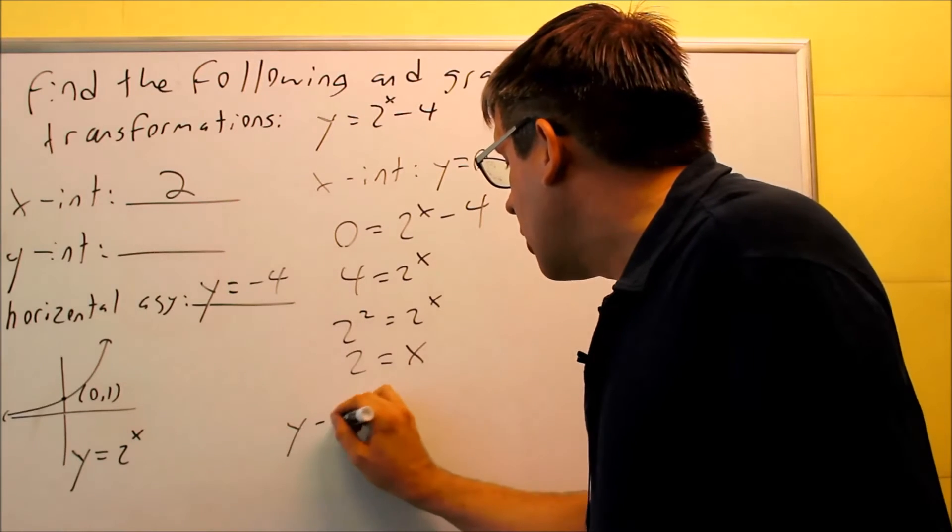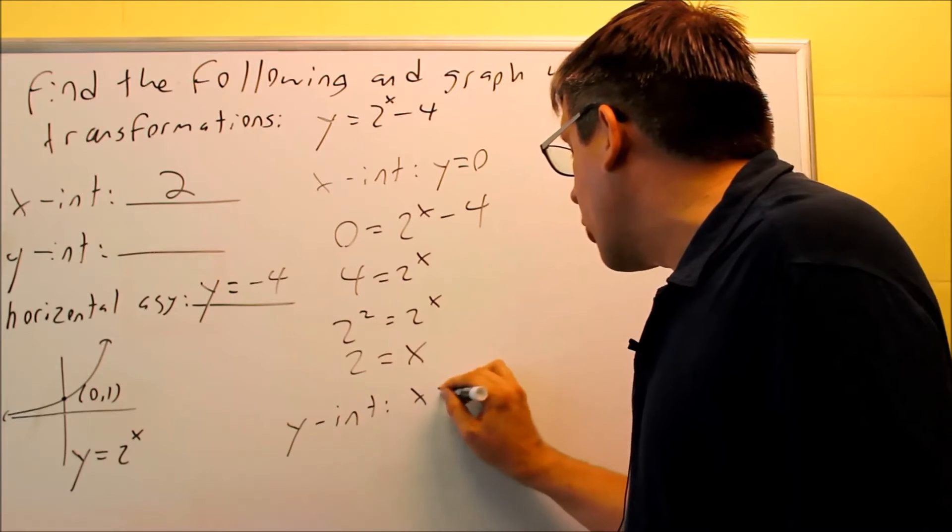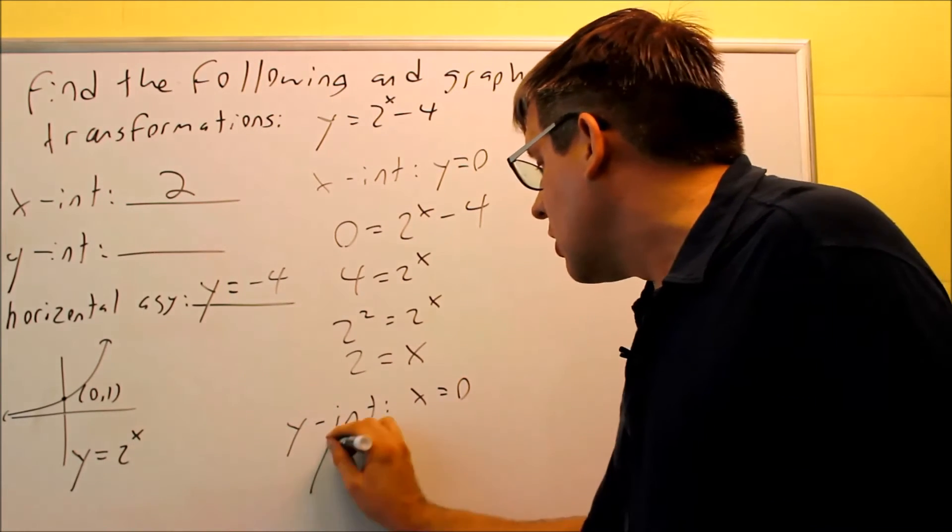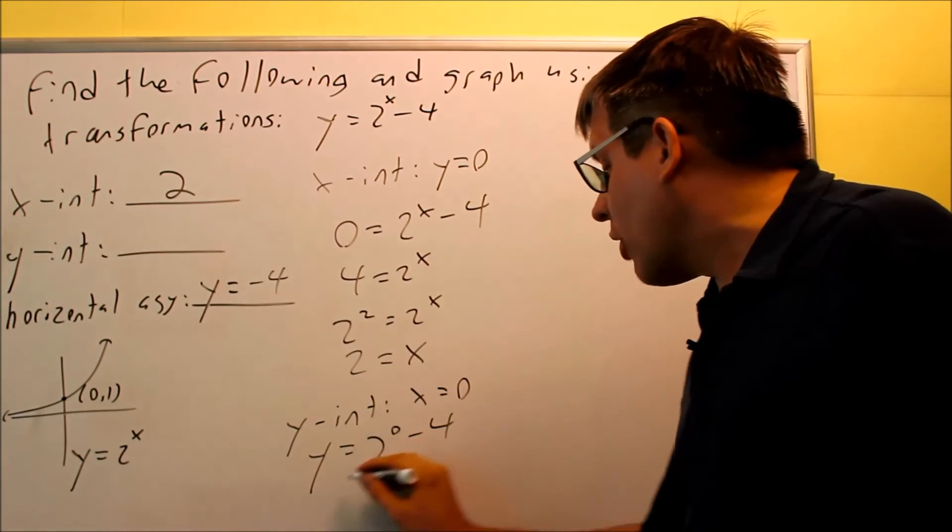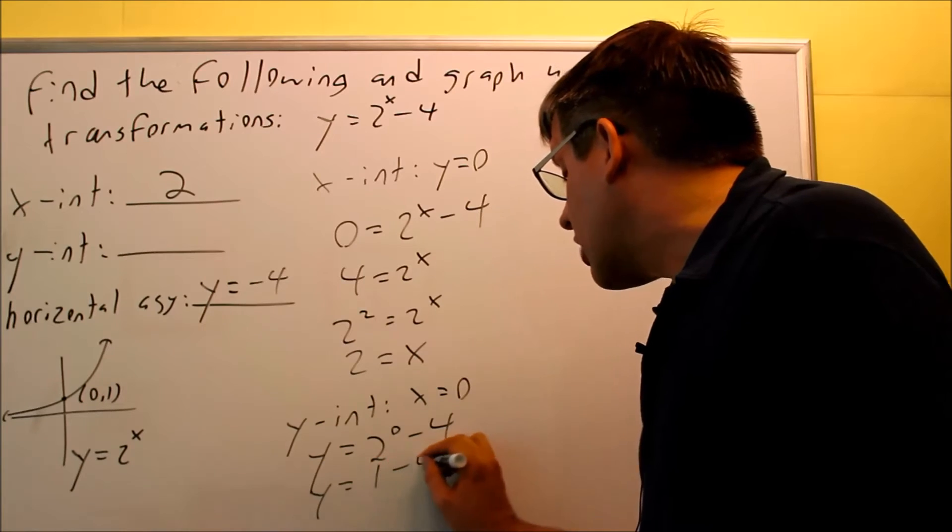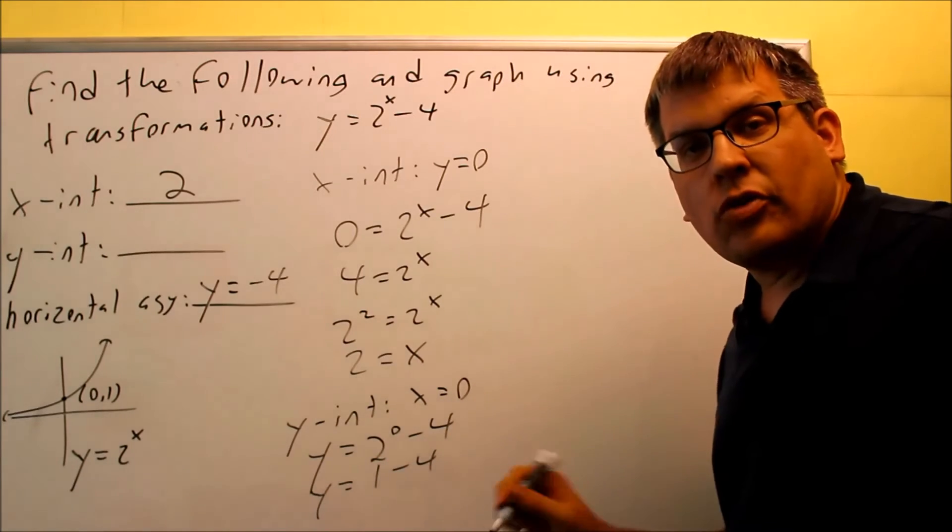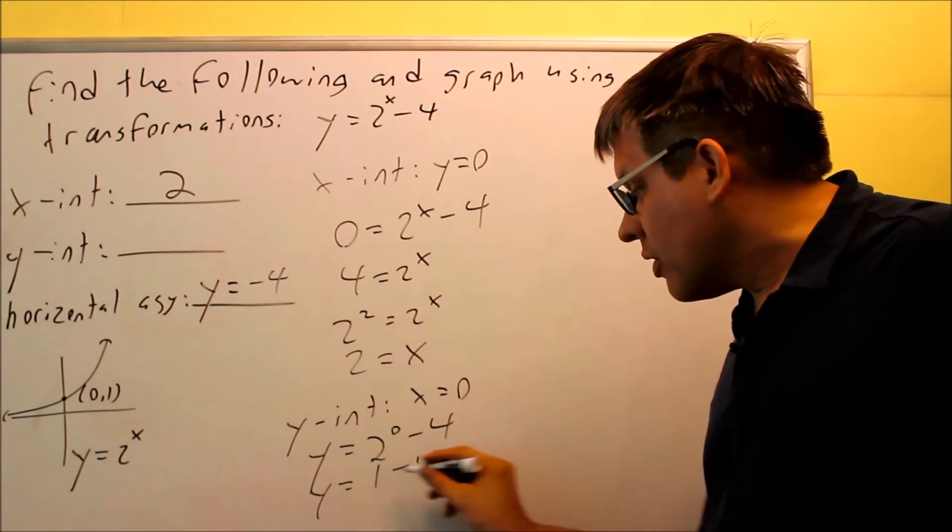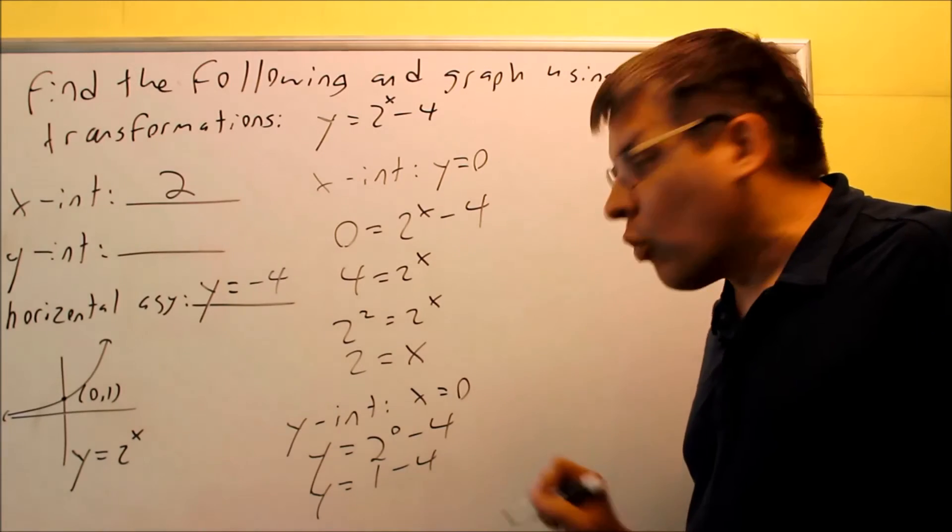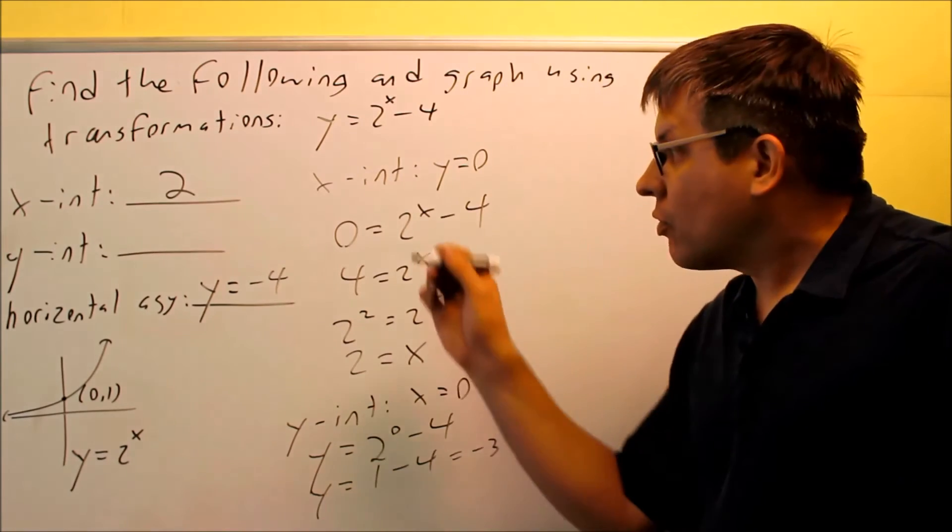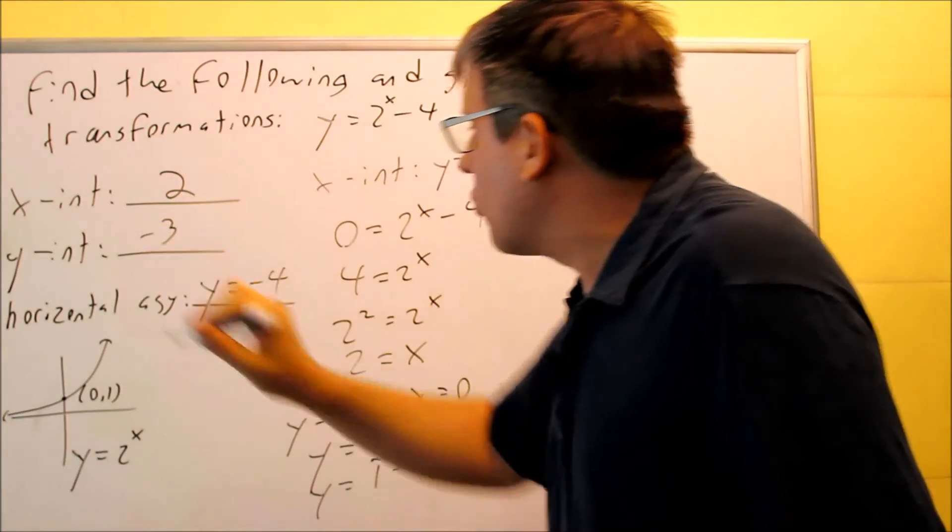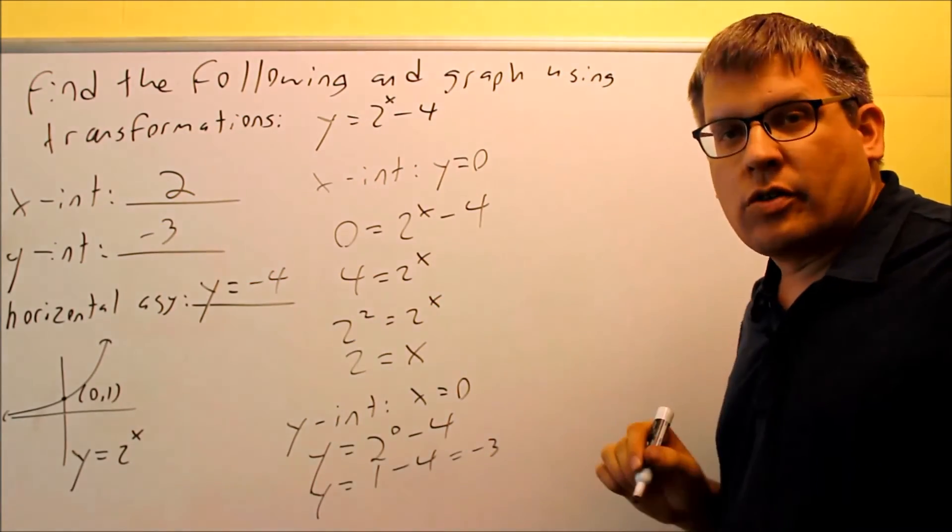Next, we want to do the y-intercept. Y-intercept is where we put in a 0 for x. So y equals 2 to the 0 minus 4. Anything raised to the 0 power, we talked about that before in a previous video, anything to the 0 power is 1. So what you're going to get here is you're going to get y equals 1 minus 4, and that's equal to negative 3. So therefore, negative 3 is going to be your y-intercept.